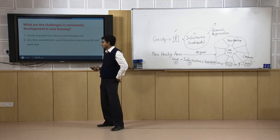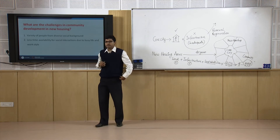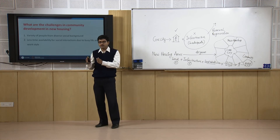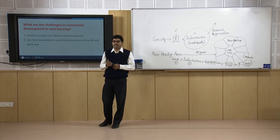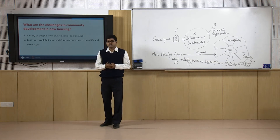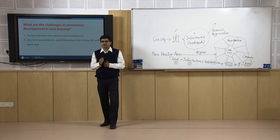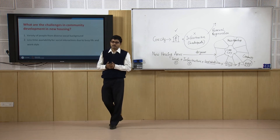The second barrier is modern lifestyle and work style — people are busier in their work life and do not have much time to spare with family or society. Even after moving into a new house, it takes a long time to get to know the person living in the immediately adjacent apartment. Since people are busier in their work and personal life, this is another reason why it takes long to create a sustainable community in housing areas.